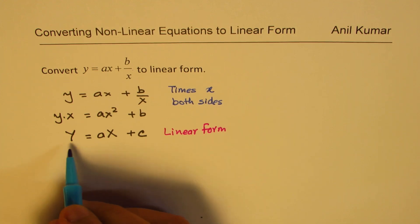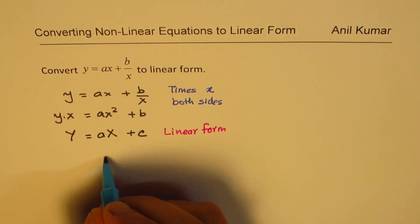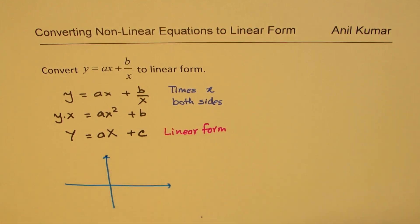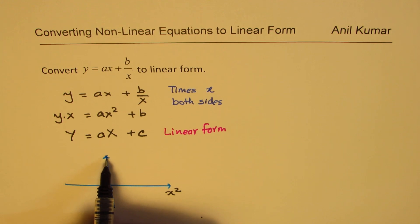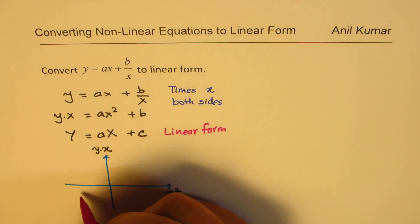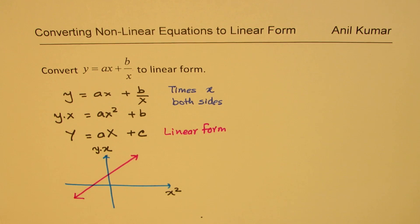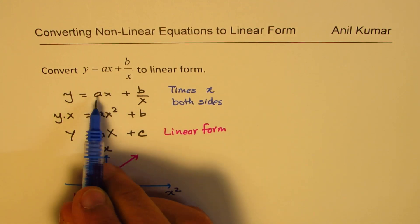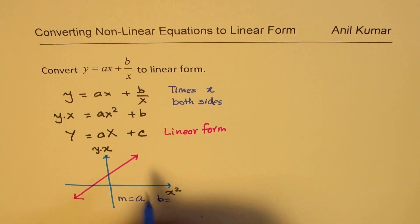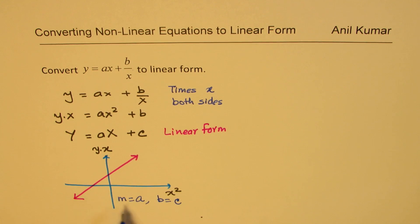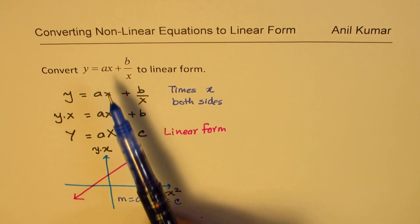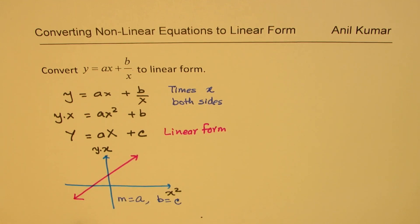In this linear form, on the x-axis we are plotting x squared, and on the y-axis we are plotting y times x. We get a straight line with slope a and y-intercept c. So slope m equals a, as in the original equation, and the y-intercept b equals the constant c. In doing so we have converted the nonlinear form to a linear form.